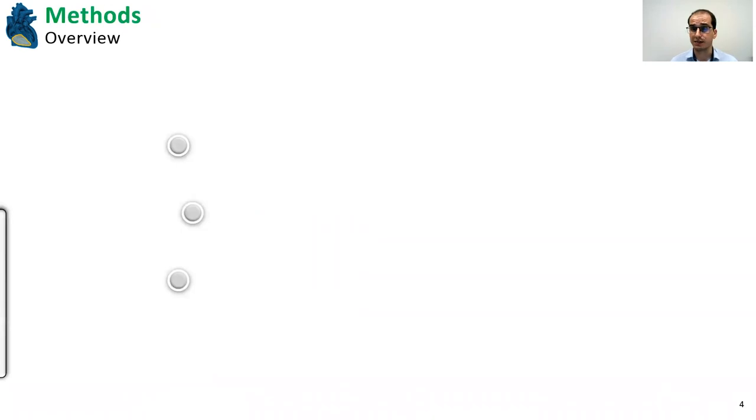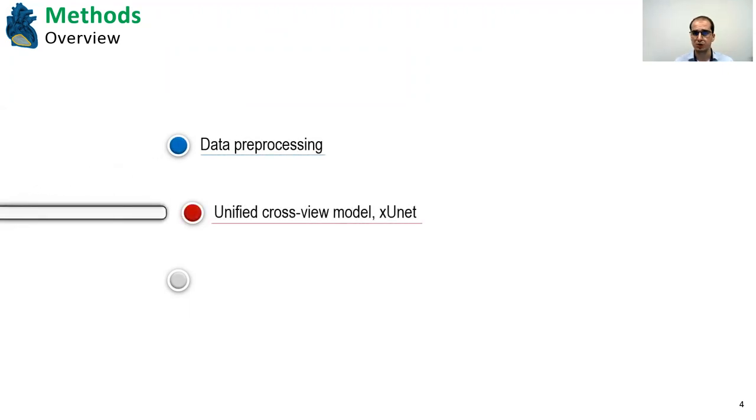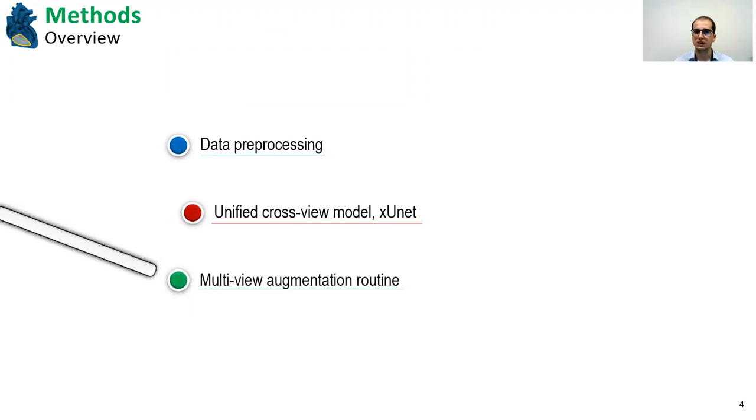This is the data that is made available and my goal within this challenge was to try to come up with a unified model that allows us to segment both the short axis tag and the long axis image simultaneously and at once, in order to take advantage of the complementary information that they share. And so to do this, I targeted my attention to three core components of a deep learning pipeline: the preprocessing stage, the architecture itself, proposing a unified cross-view model that I named XUnet, and the training stage, more specifically the augmentation routine used.